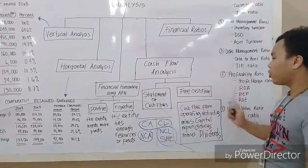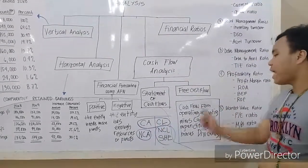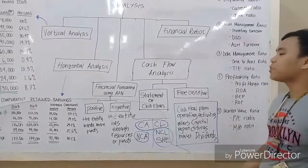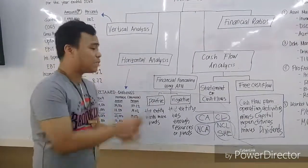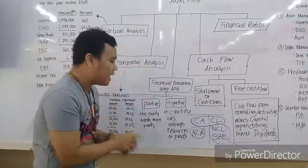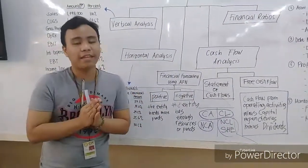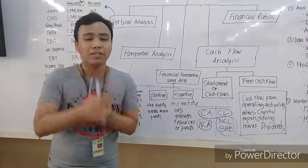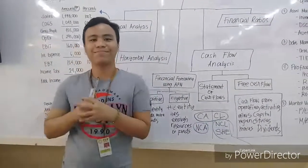The formula for free cash flow is: cash flow from operating activities minus capital expenditures minus dividends. For financial forecasting using the Additional Funds Needed (AFN) method: if the result is positive, the entity needs more funds; if negative, the entity has enough funds. The formula for AFN is: increase in assets minus increase in spontaneous liabilities minus increase in retained earnings.